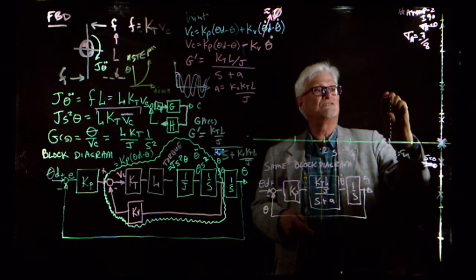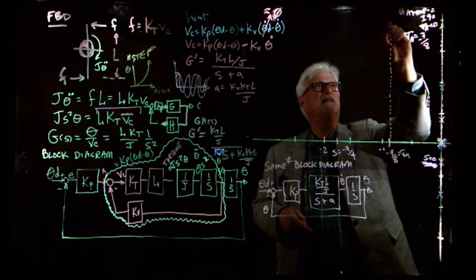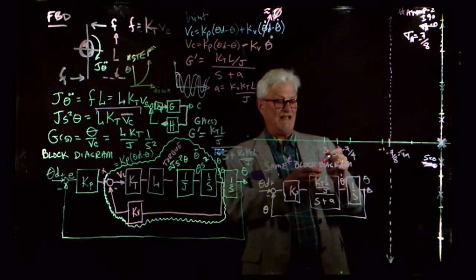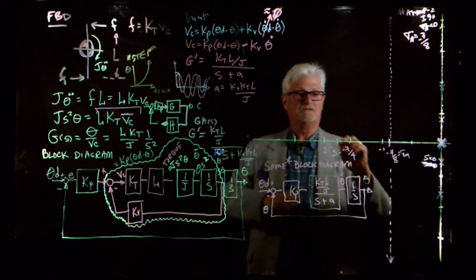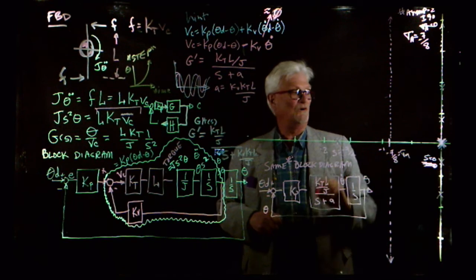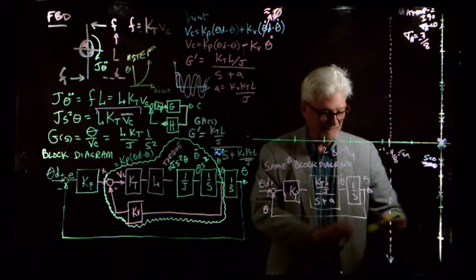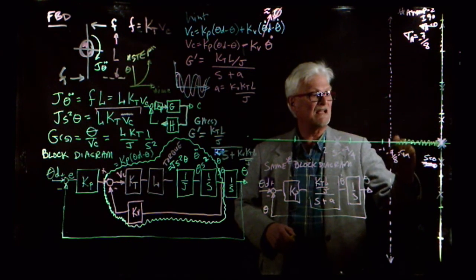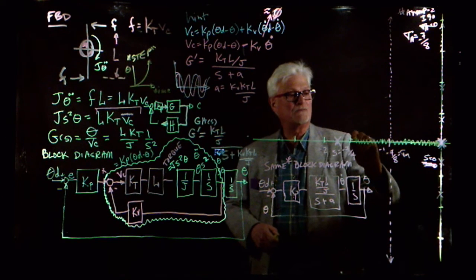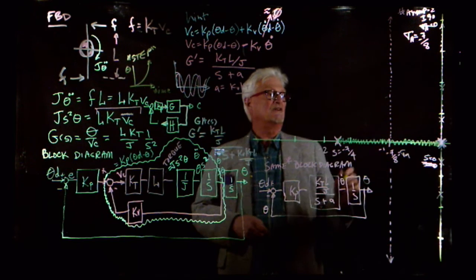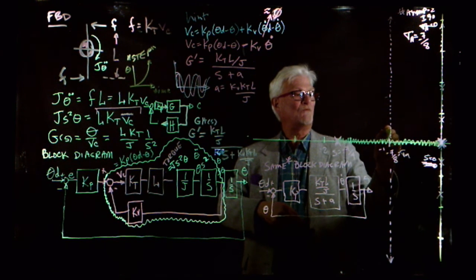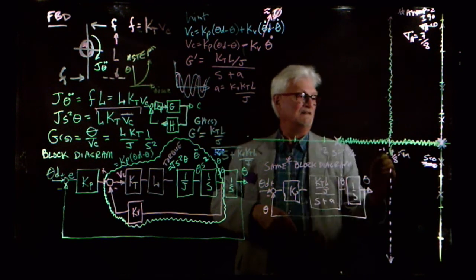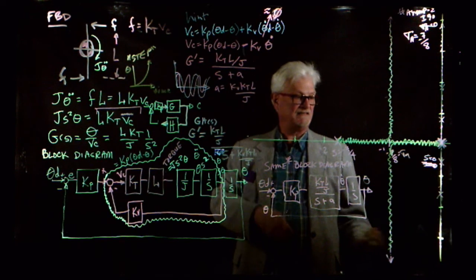There are still two asymptotes at 90 degrees, but now sigma_A is the sum of poles minus sum of zeros divided by two, which gives minus seven-eighths. With real axis segments to the left of the odd-numbered poles and zeros, and with the asymptotes, I can draw my new root locus.